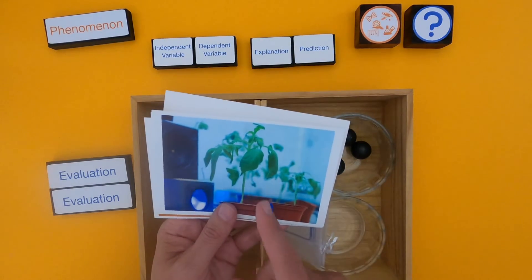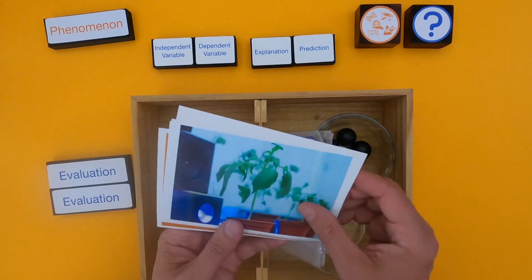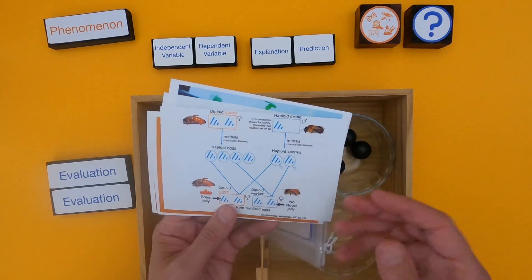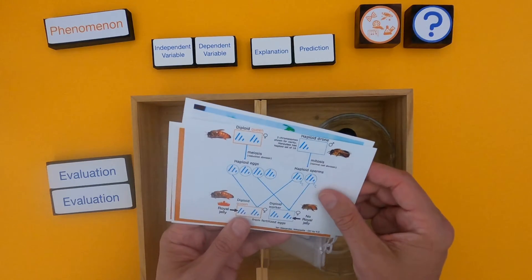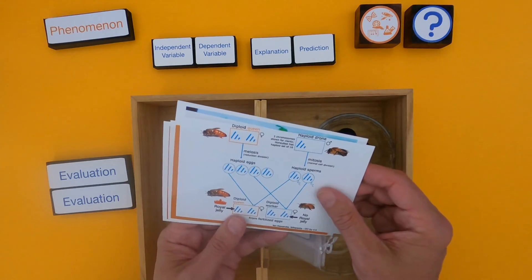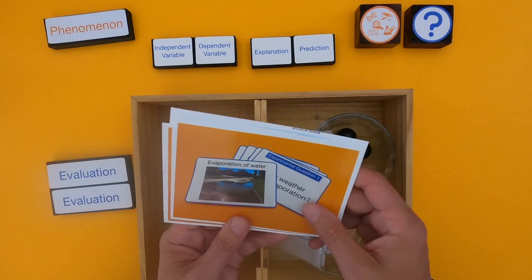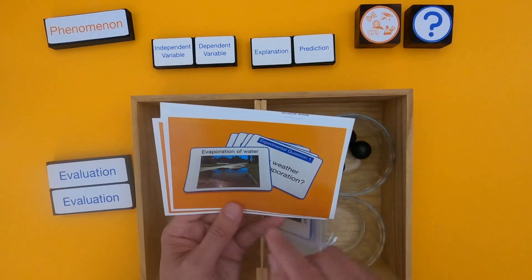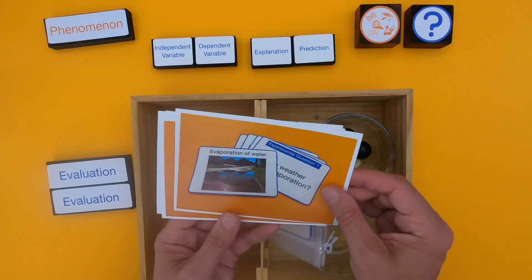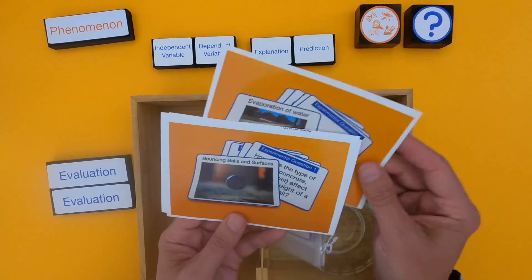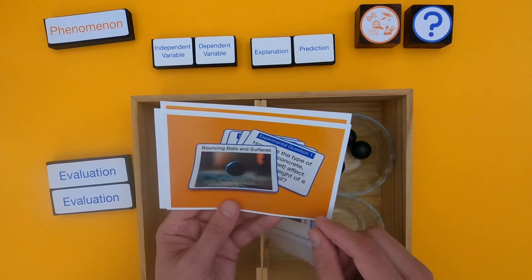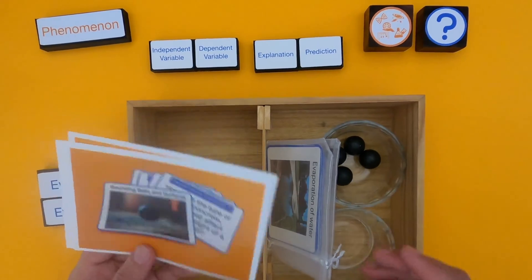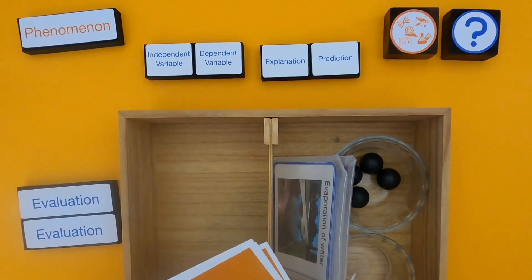After watching this video, you should be able to evaluate student questions around phenomena, like does music affect plant growth, or how does royal jelly affect development of honeybee queens? I'm going to start by evaluating some student questions around the phenomena of evaporation of water, and then you'll have a chance to do the same with bouncing balls and surfaces. Let me clean up and we'll get started.